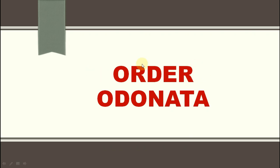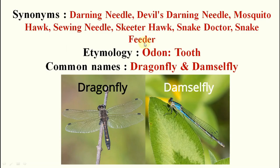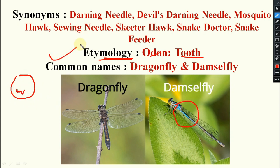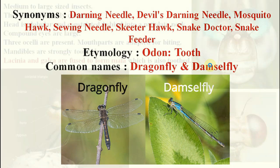We will discuss about Order Odonata. The common examples are dragonfly and damselfly. They are predatory in nature, which is why they have synonyms like running needle, devil's darning needle, mosquito hawk, sewing needle, skimmer hawk, and snake feeder. The etymology: 'odon' means tooth, referring to their highly sclerotized body and strongly toothed mandibles with denticles.